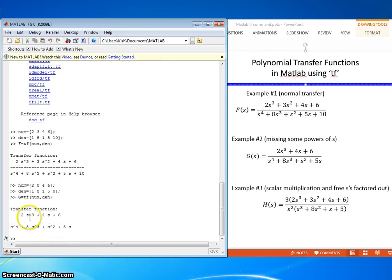And there it is. Again, we can check it. 2s cubed plus 4s plus 6. That checks. s to the fourth plus 8s cubed plus s squared plus 5s. And that checks.